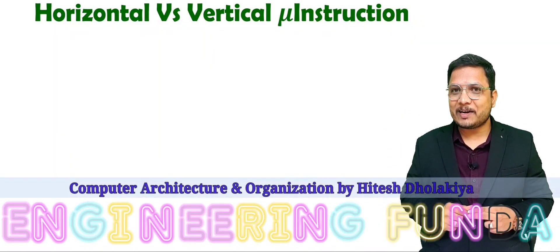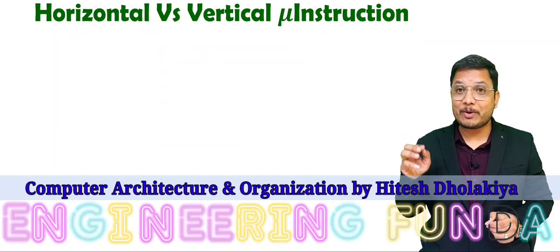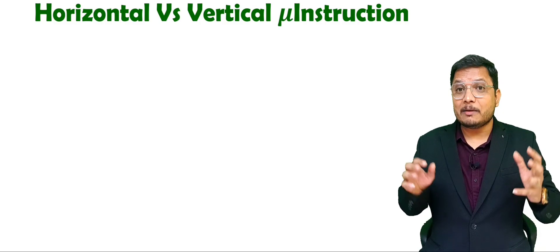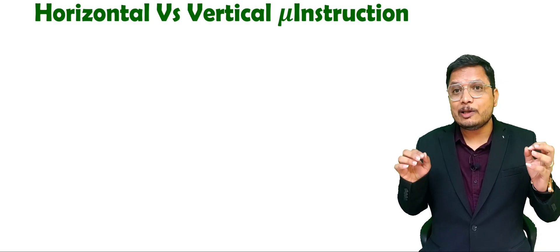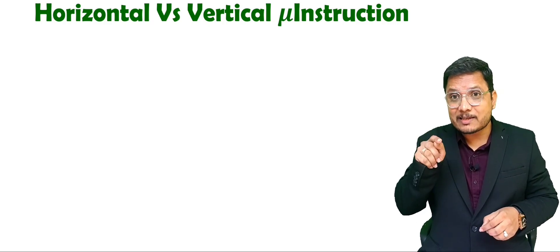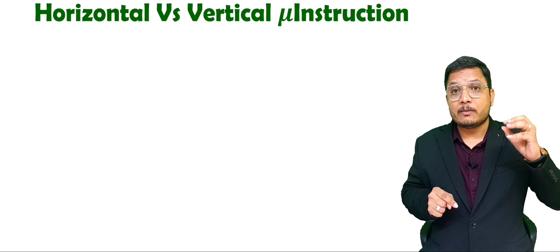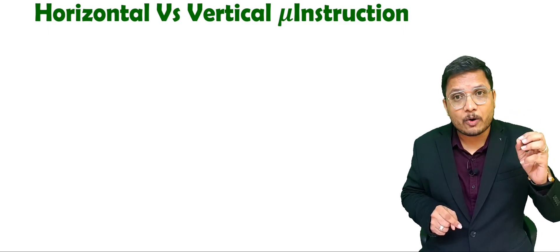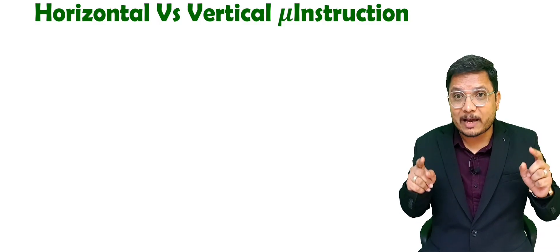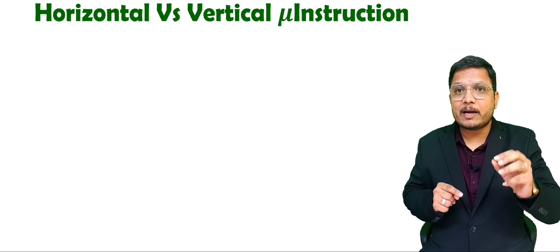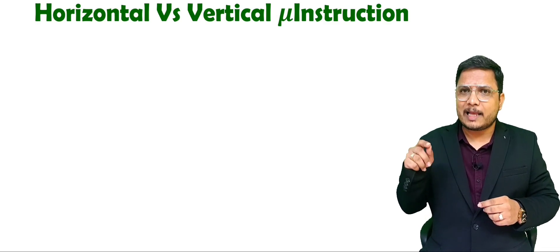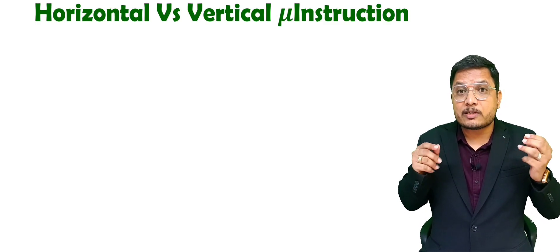Hello friends, welcome to Engineering Funda family. In this video, I am going to explain horizontal micro instructions and vertical micro instructions in microprogrammed control unit. You should know that with a microprogrammed control unit, when you execute one instruction, that instruction is a combination of multiple micro operations, and those micro operations are performed by micro instructions. The format of those micro instructions is divided into two parts: horizontal micro instruction and vertical micro instruction.